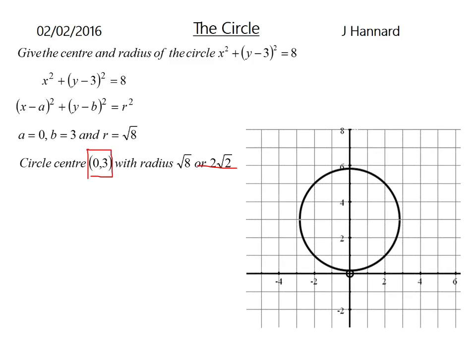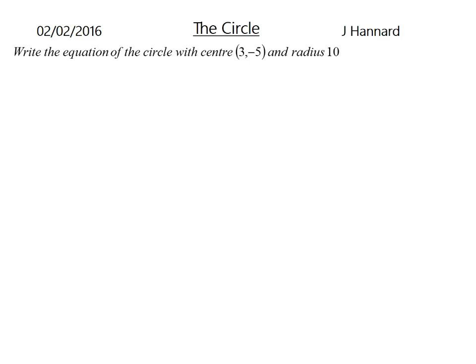So it's a circle with centre 0, 3, with a radius of root 8, or 2 root 2, which is good. There's the circle there. Radius of about 2.9, which I think is 2 root 2-ish. And the centre is at 3, 0, which is 0, 3, which is what we said.